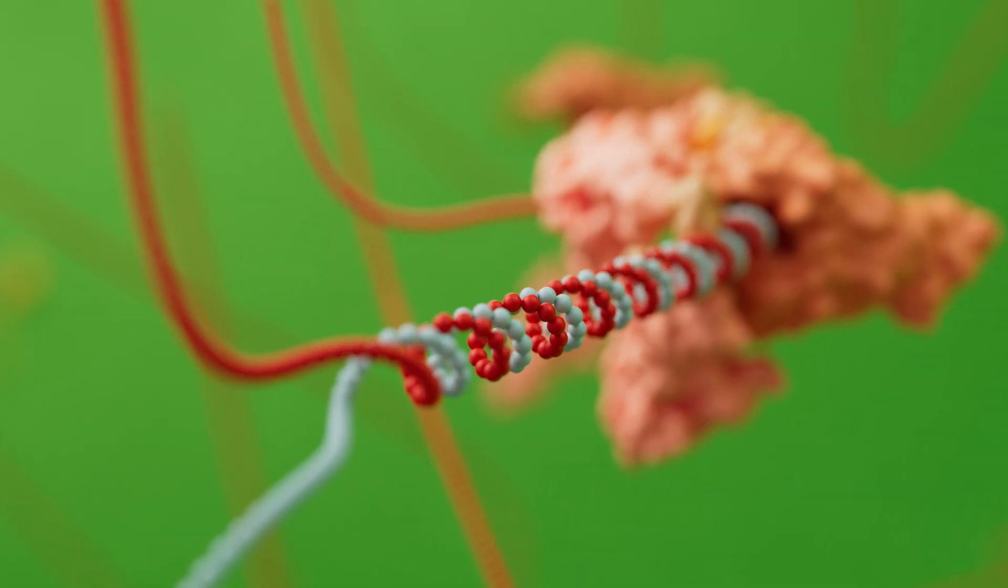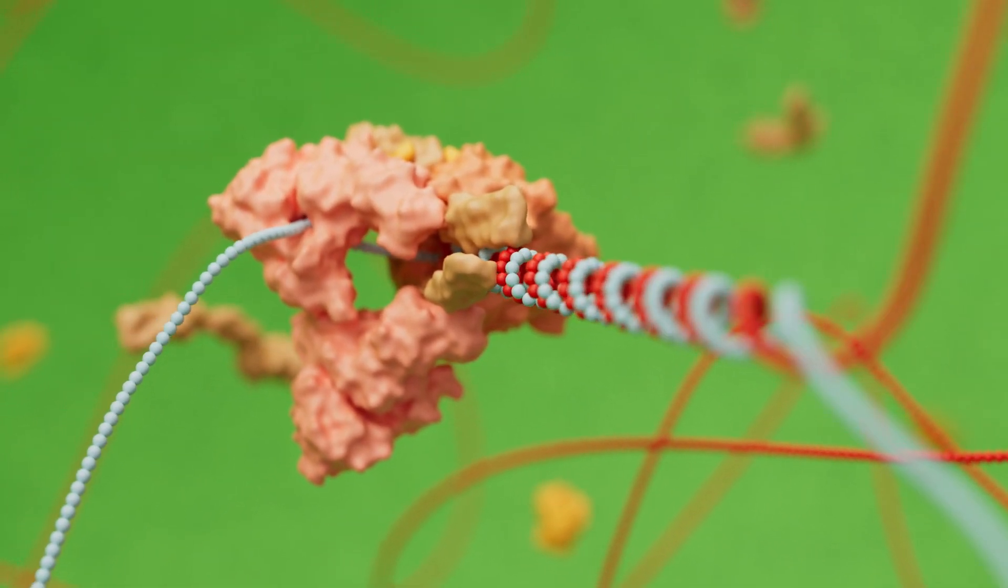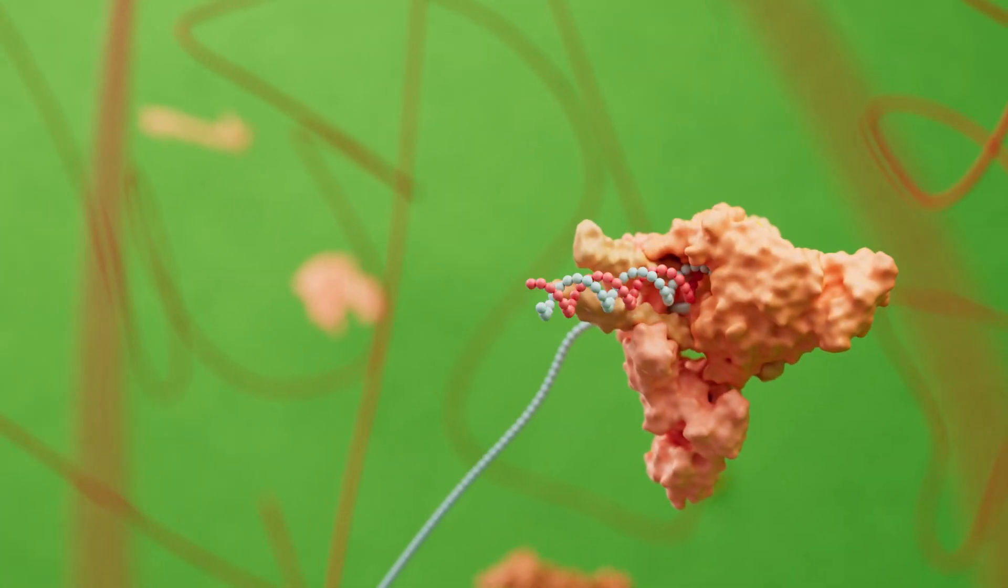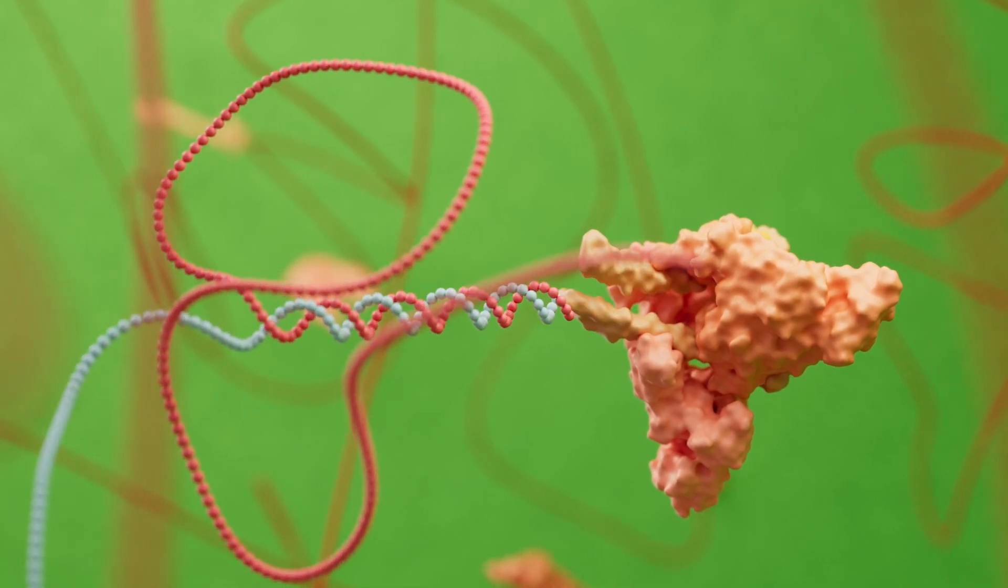Firstly, a complementary strand is made to act as a reference. This reference then becomes the template for a new strand identical to the original viral genome. In addition to the full-length viral genome, a set of shorter RNA strands is also created.